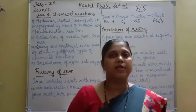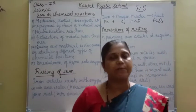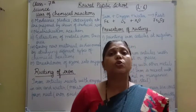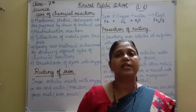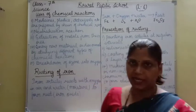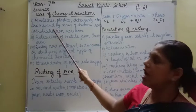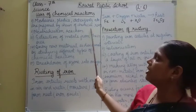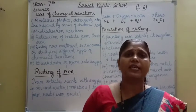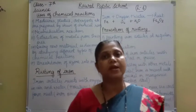First: uses of chemical reactions or chemical changes. Now we have studied many chemical changes — I have explained many examples. So the first use is that medicines, plastics, detergents, soaps etc. are prepared by chemical reactions. Many products are made by chemical reactions.